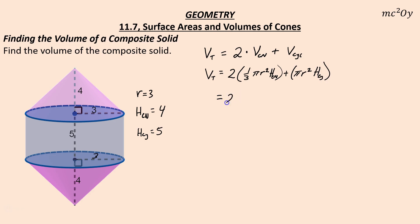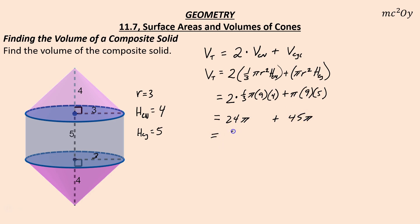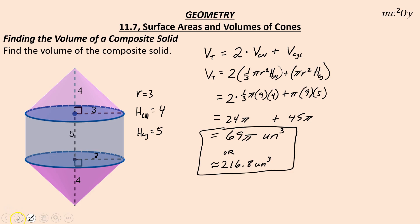Substituting in: 2 × one-third × π × 9 × 4, plus π × 9 × 5. One-third of 9 is 3, so 3 × 2 × 4 = 24, giving 24π. Plus 9 × 5 = 45π. Adding 24π and 45π gives 69π — that is the exact volume in cubic units. Rounded to the nearest tenth, that would be 216.8 cubic units. That's it — surface area and volume of cones. Good luck.